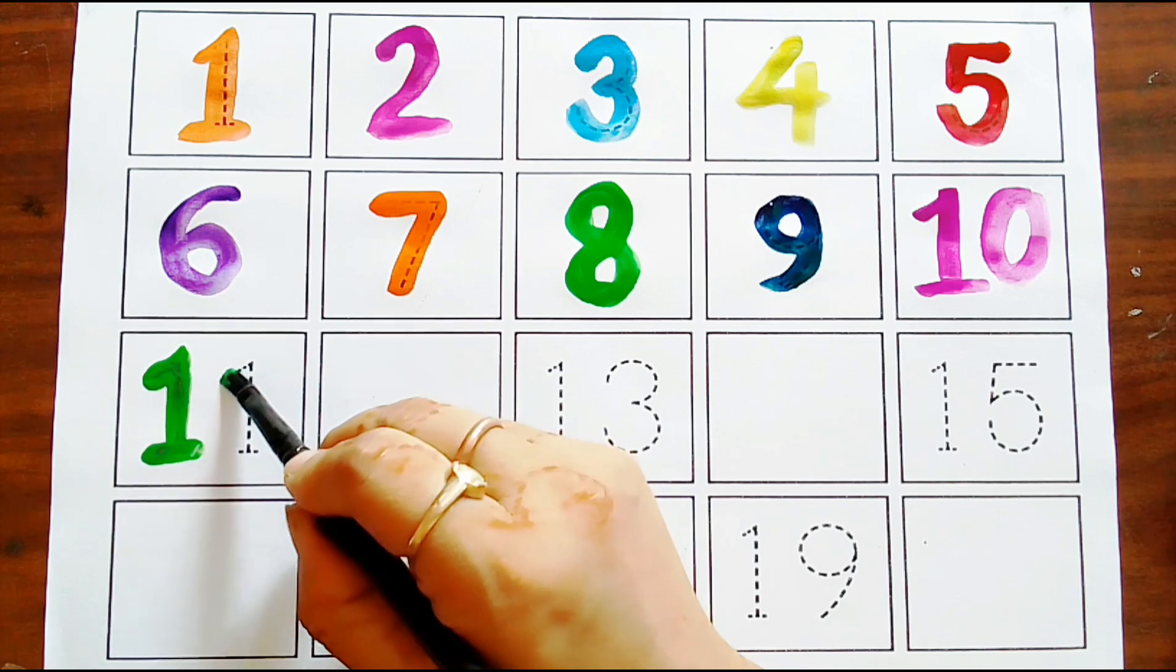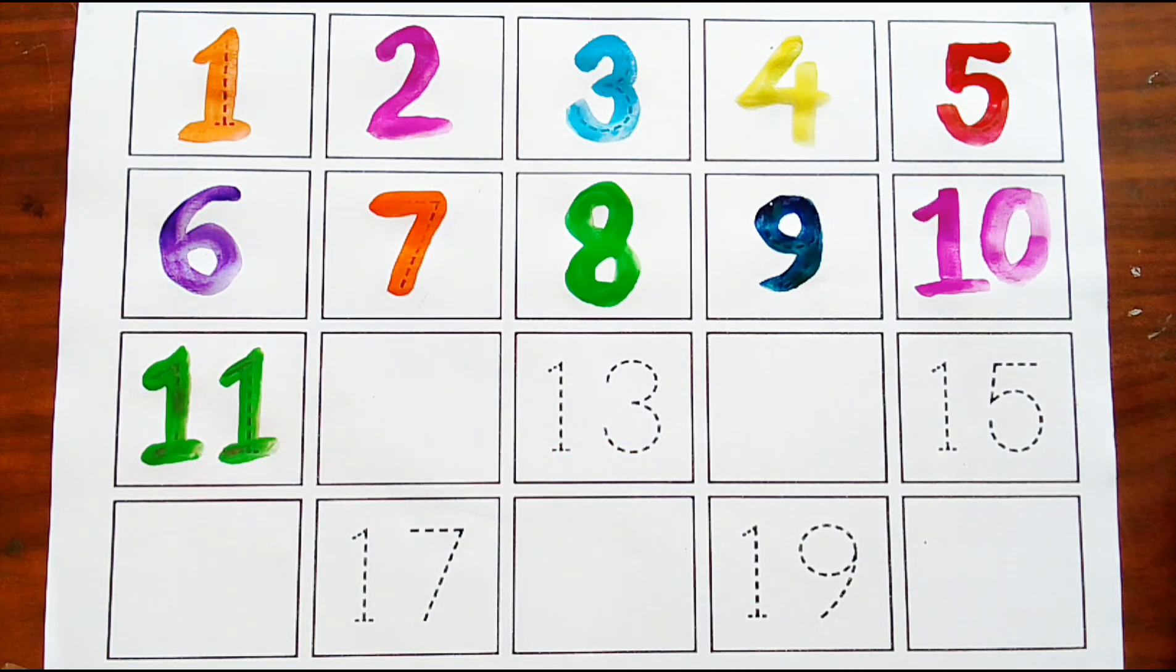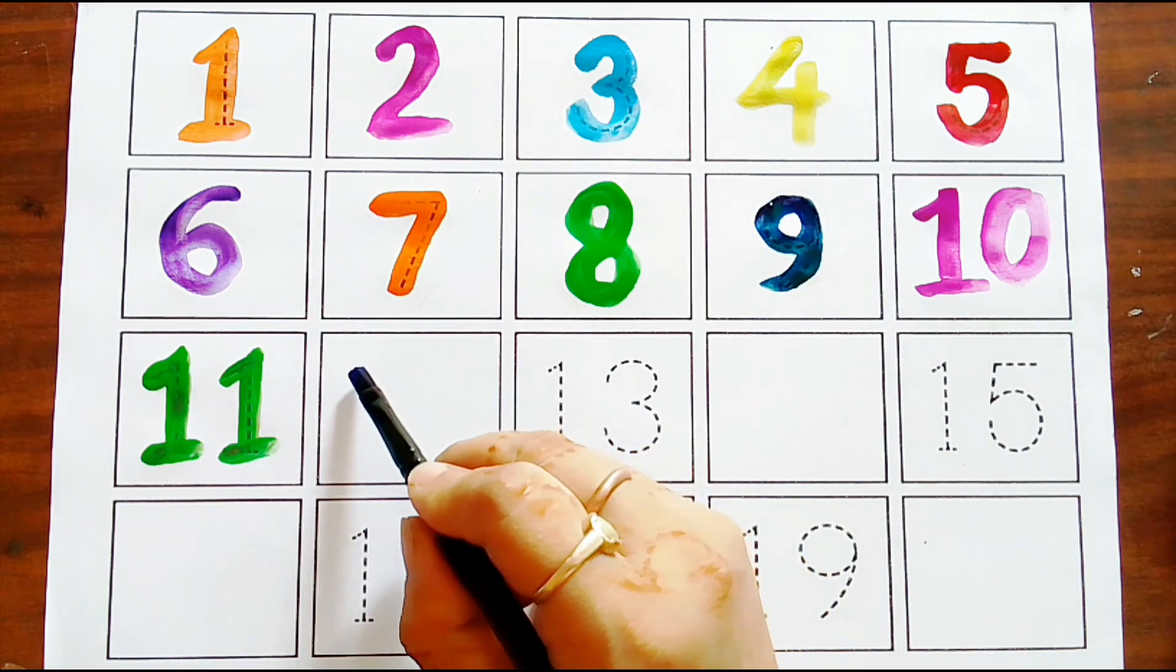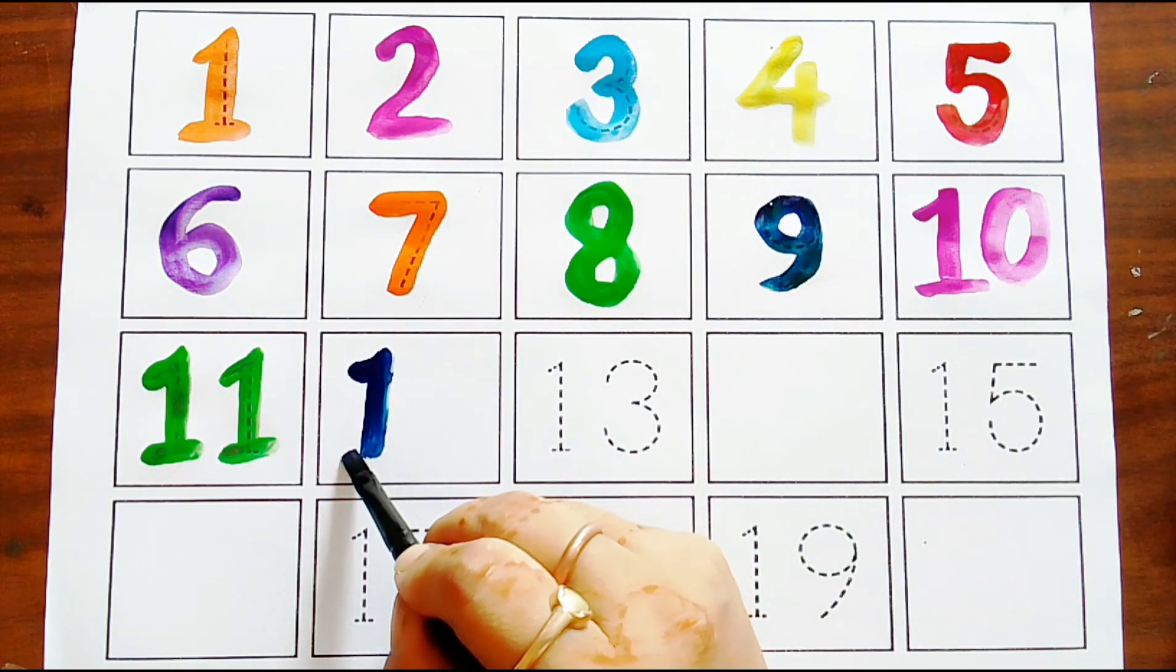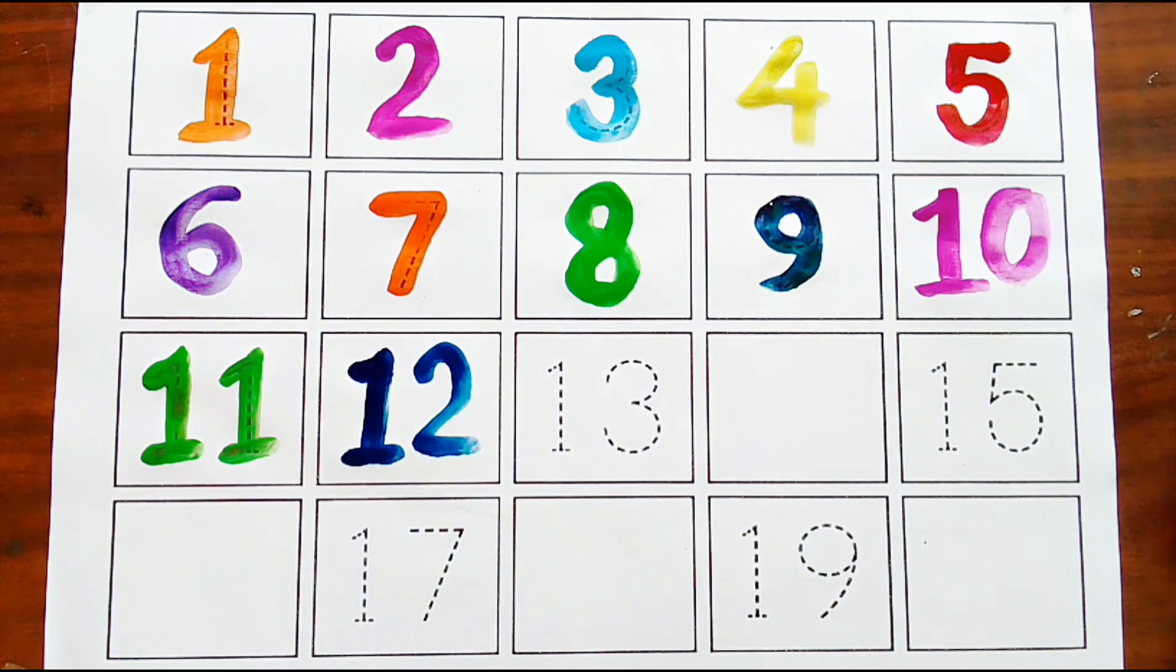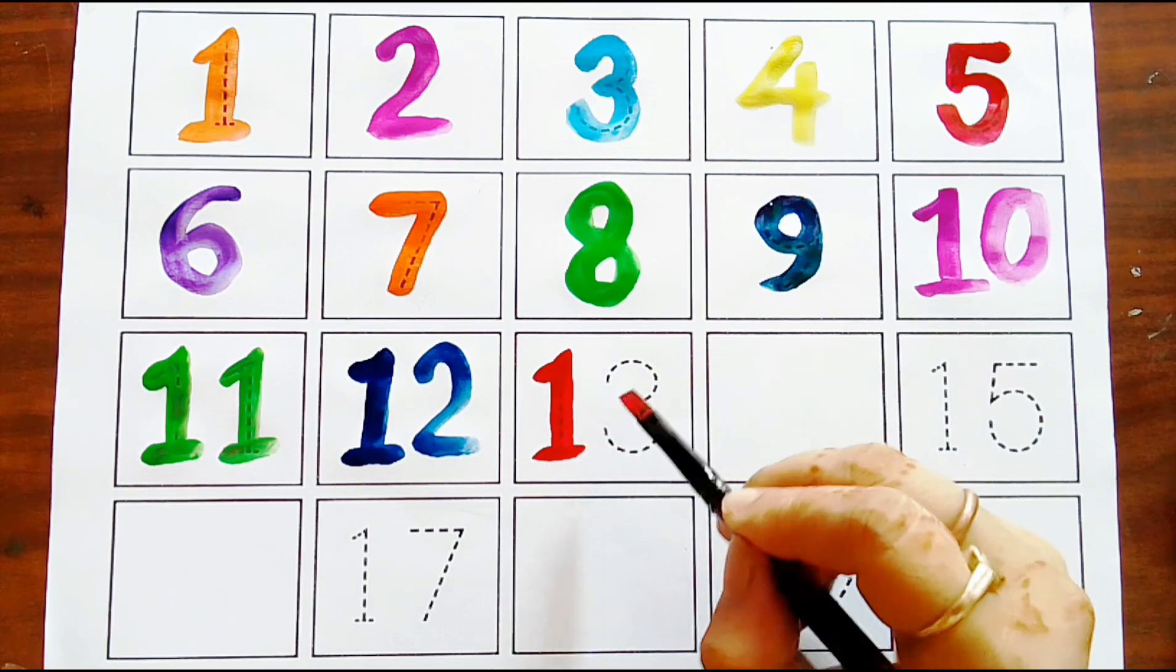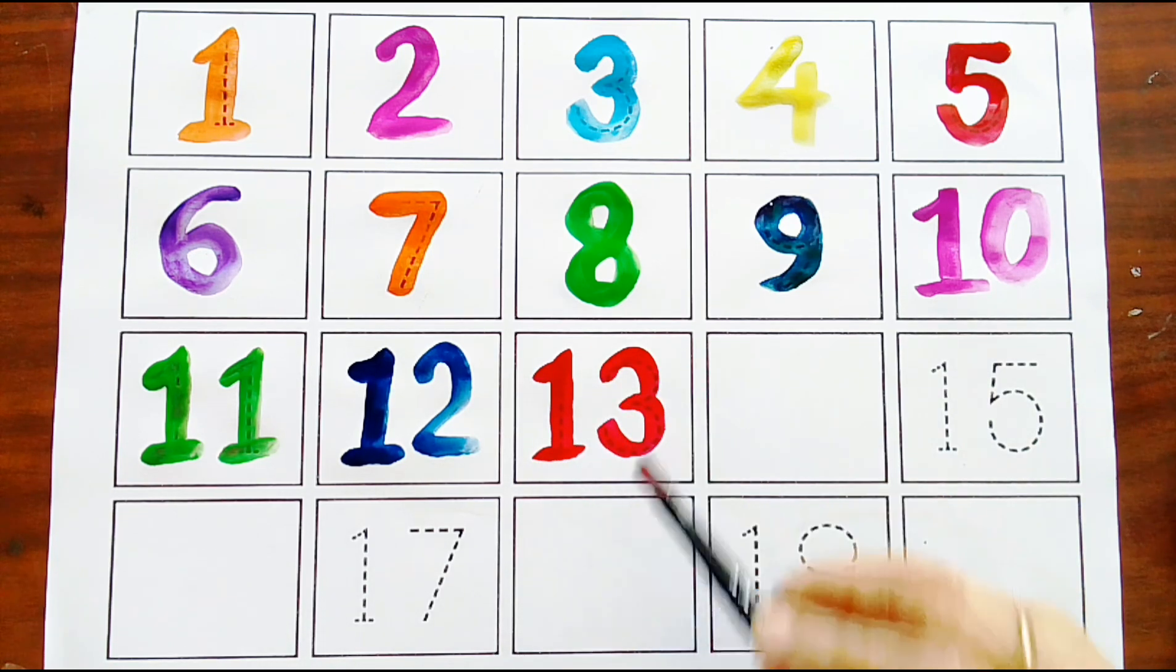Green color, one one, eleven missing number. Twelve, navy blue color. One two, twelve. Red color, one three, thirteen.